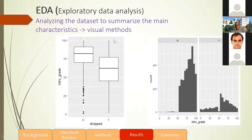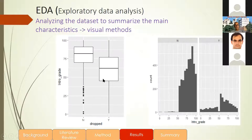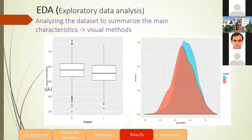We did some visualization and analyzed the data. We wanted to see if students dropped from studies according to their introduction to calculus grade, and we can see that students who have low grades dropped more. We also checked the psychometric score — called SAT in the United States — and we can see that SAT scores have almost no difference in predicting whether students will drop out or not.